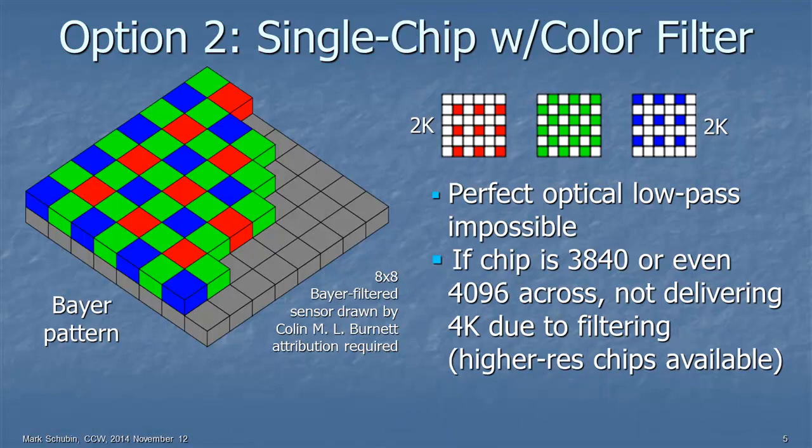This is much more common. People take the large sensor but use only one sensor and don't have the prism. And they put a color filter on top, typically a Bayer filter. There are different resolutions used, but if the chip is either 3840 across or even 4096 across, it's not delivering 4K due to that filtering.